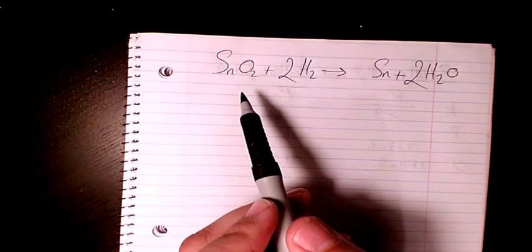It means that one mole of tin oxide reacts with two moles of hydrogen gives tin plus two moles of water.